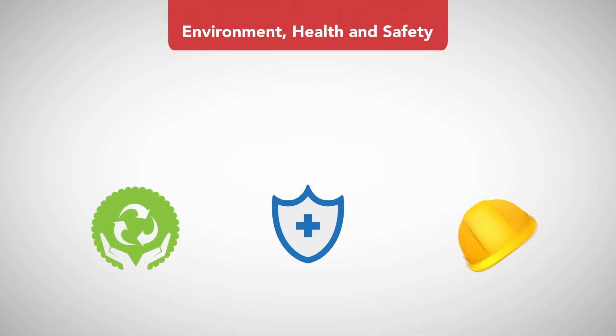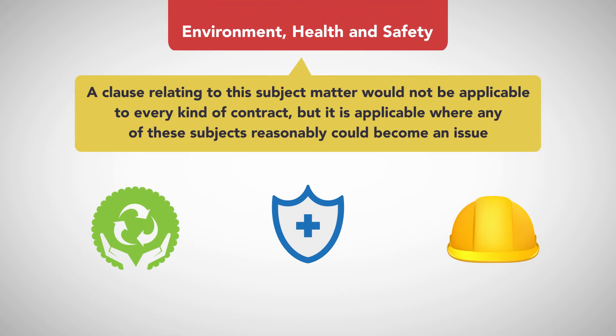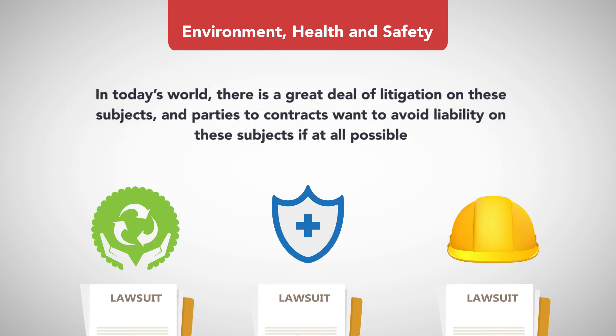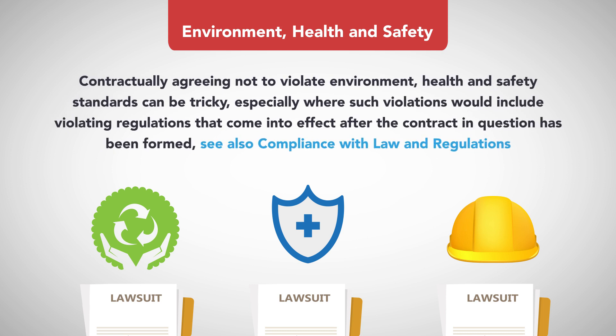Environment, Health, and Safety. A clause relating to this subject matter would not be applicable to every kind of contract, but it is applicable where any of these subjects reasonably could become an issue. In today's world, there is a great deal of litigation on these subjects, and parties to contracts want to avoid liability on these subjects if at all possible. Contractually agreeing not to violate environment, health, and safety standards can be tricky, especially where such violations would include violating regulations that come into effect after the contract in question has been formed. See also: Compliance with Law and Regulations.